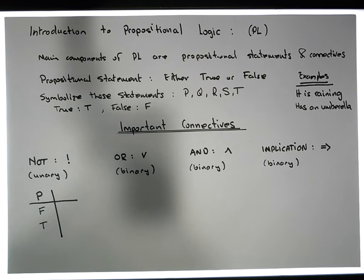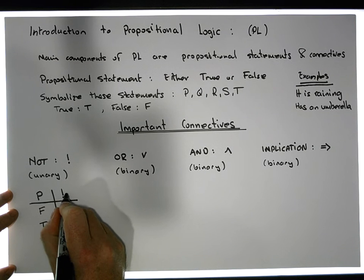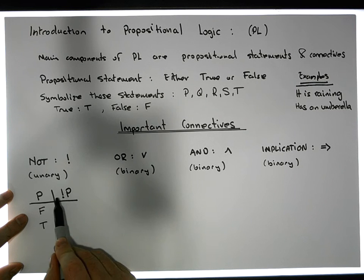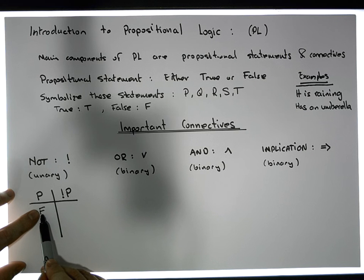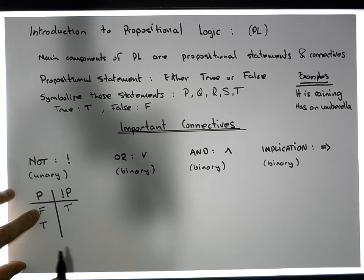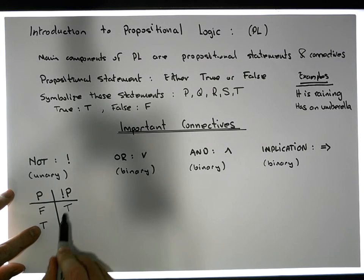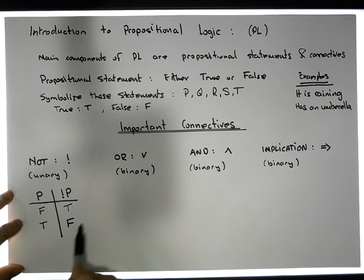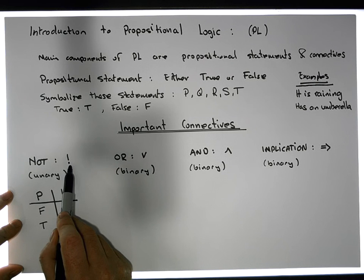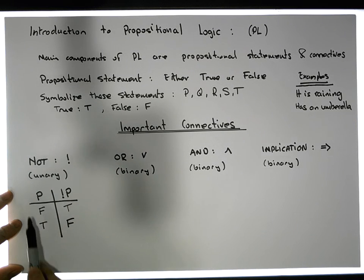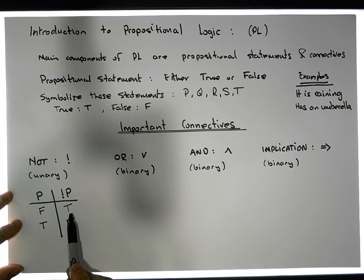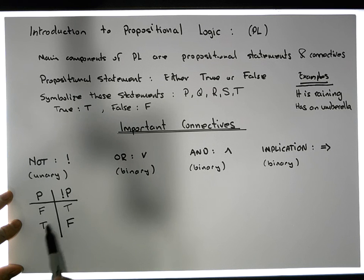In relation to the unary NOT operator, it acts on a single proposition — let's call it P. We list down all the truth values P can take on at any moment in time. A proposition P can either be false or true — those are the possible states. It can't be both, it can only be one. The result of NOT P, or the negation of P, is dependent on the state of the original proposition. If P is false, then NOT P is true. If P is true, then NOT P is false.